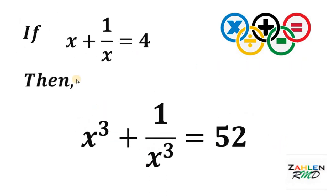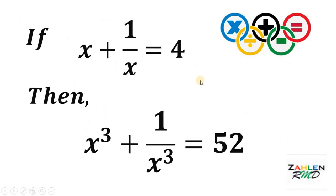Therefore, if we have x plus 1 over x equals 4, x cubed plus 1 over x cubed must be 52.